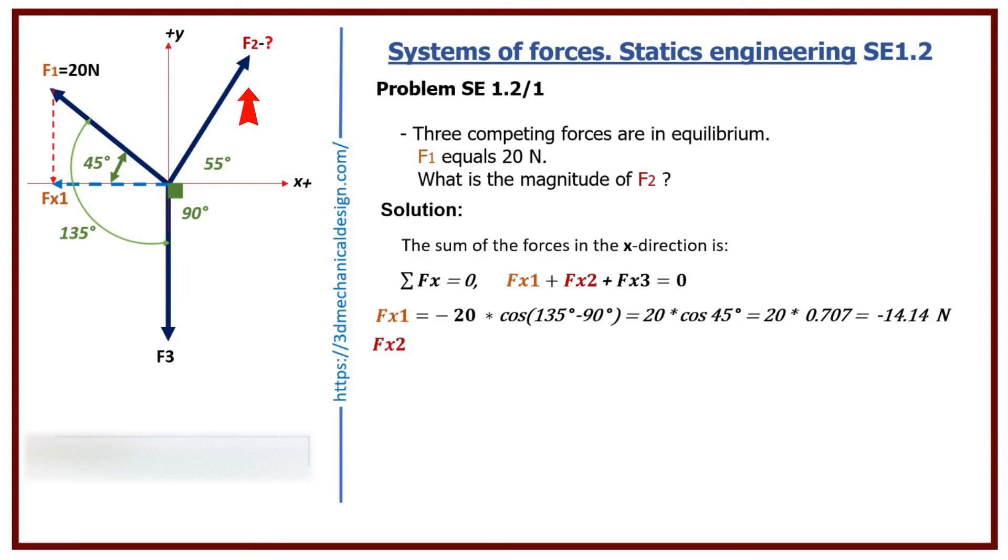Fx2 equals F2 times cosine 55 degrees. Fx3 equals F3 times cosine 90 degrees equals 0.